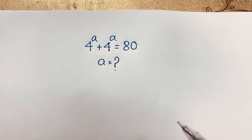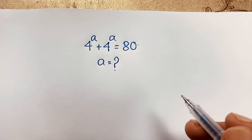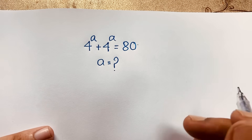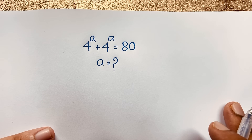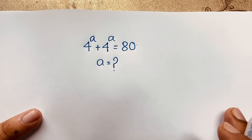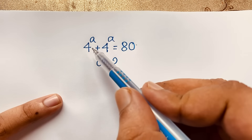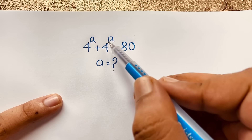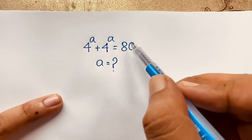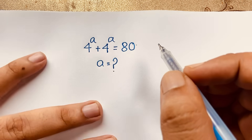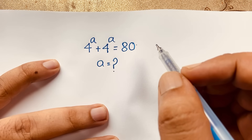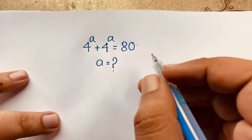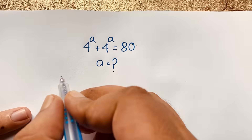Hello everyone, welcome to my YouTube channel, welcome to Russia's Classroom. Today we are solving an interesting exponential math problem — this German Maths Olympiad question: 4 to the power a plus 4 to the power a is equal to 80. Find a.